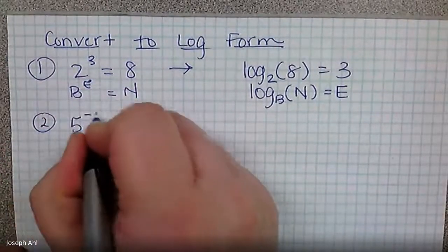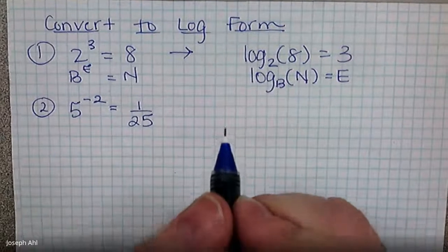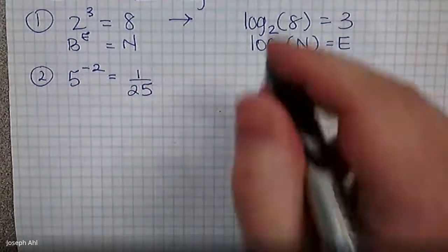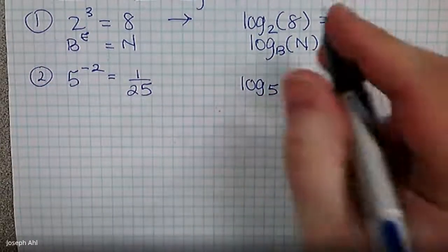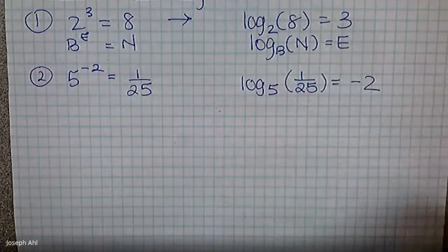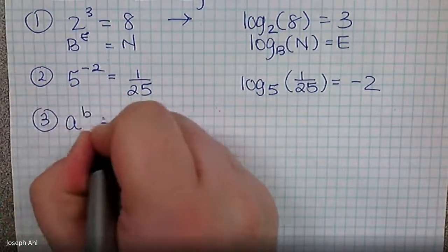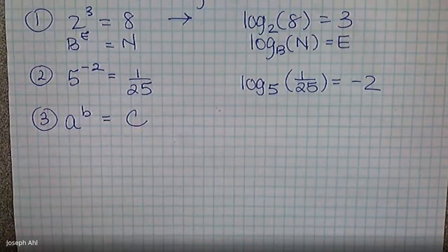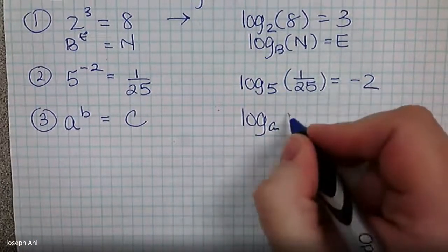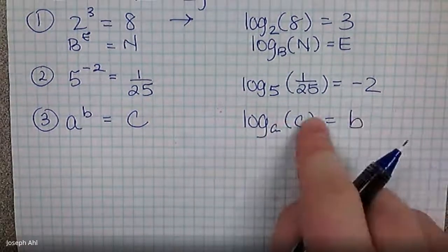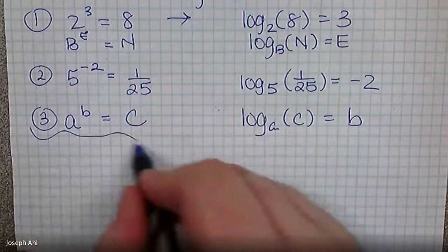Here's another example. Five to the negative second power — five to the negative second is one over five squared, which is one twenty-fifth. So in log form: log base five of one twenty-fifth equals negative two. The base of the exponential becomes the base of the log, and the exponent negative two is the answer. And even if there's a bunch of variables: A to the B equals C converts to log base A of C equals B.